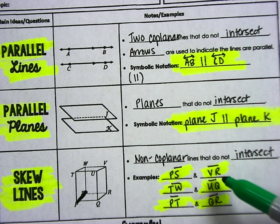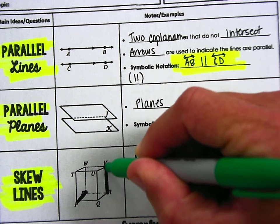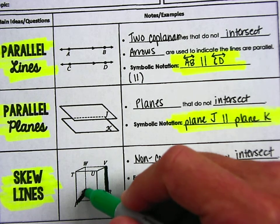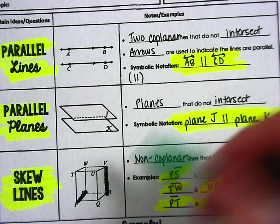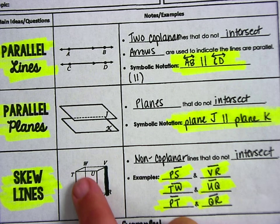And then look, segment VR is in the back, but it's going in a different direction. This one's going in a north-south direction, and this one's going in an east-west direction, but you see how they're never going to intersect. Another example, look, TW.